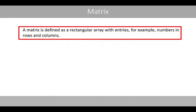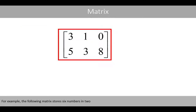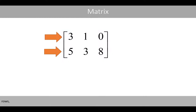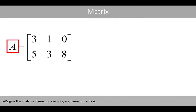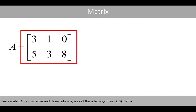A matrix is defined as a rectangular array with entries, for example numbers, in rows and columns. For example, the following matrix stores six numbers in two rows and three columns. Let's give this matrix a name — we name it matrix A. Since matrix A has two rows and three columns, we call this a two by three matrix.